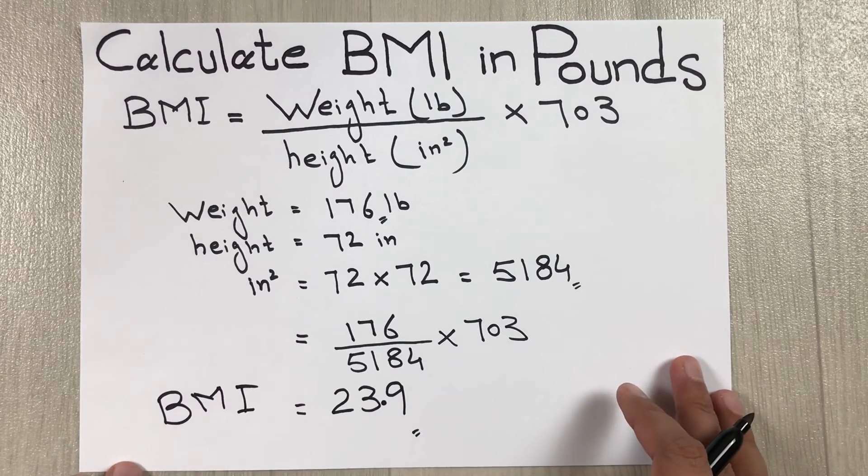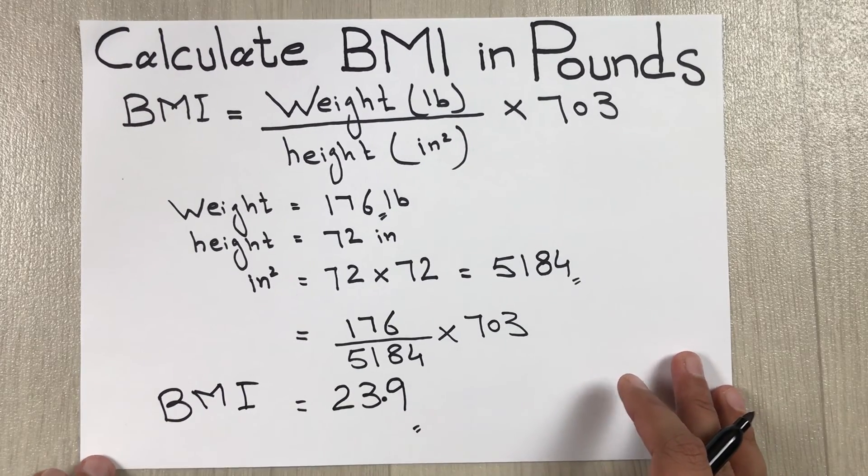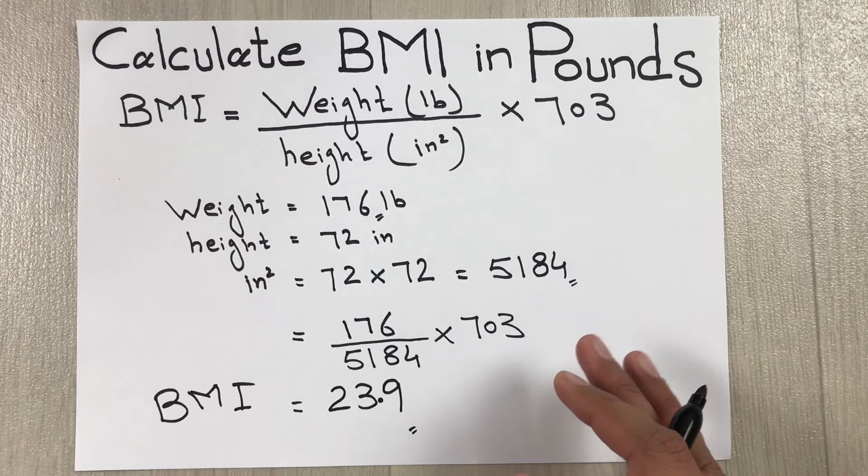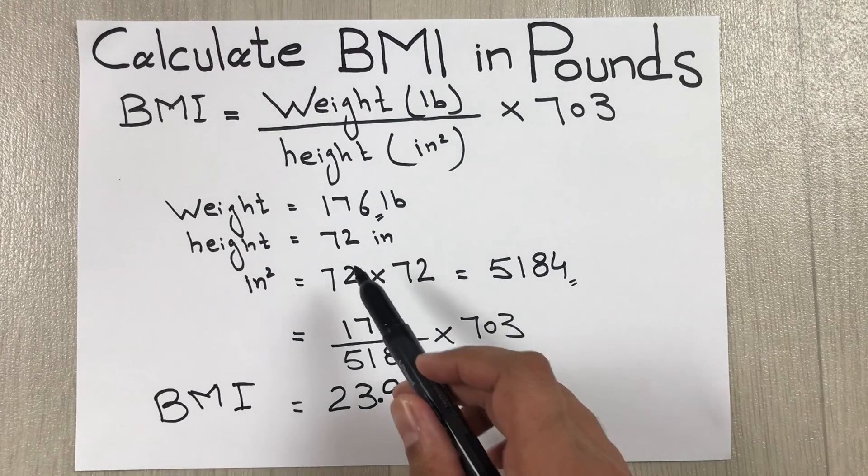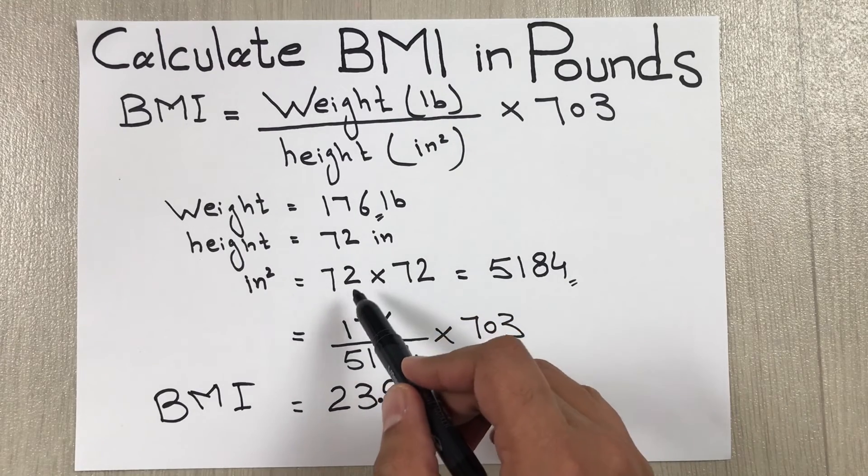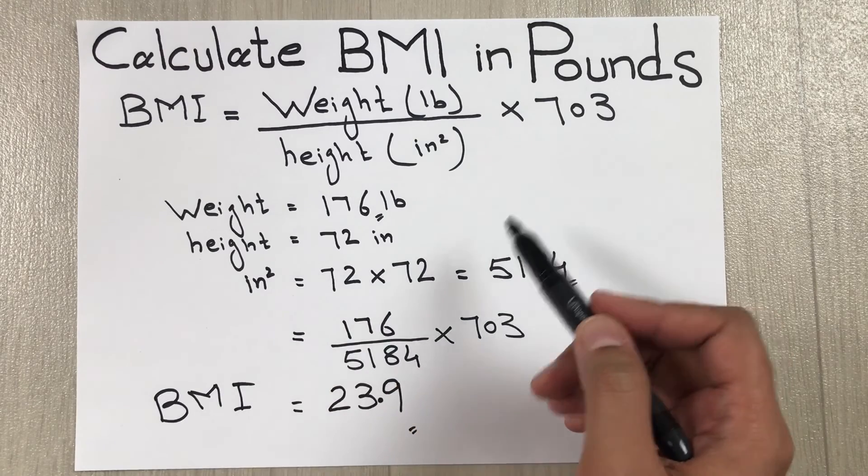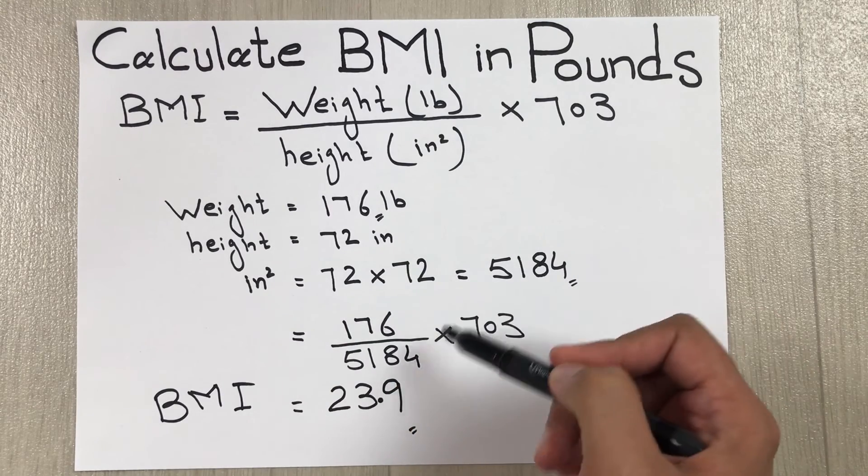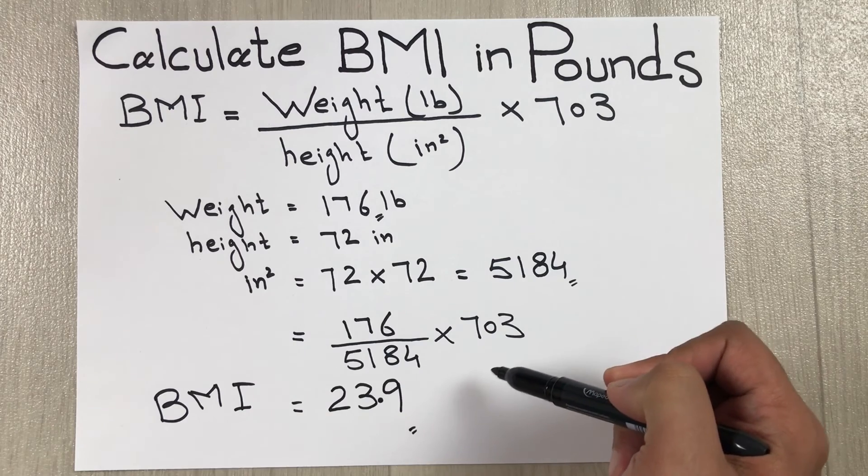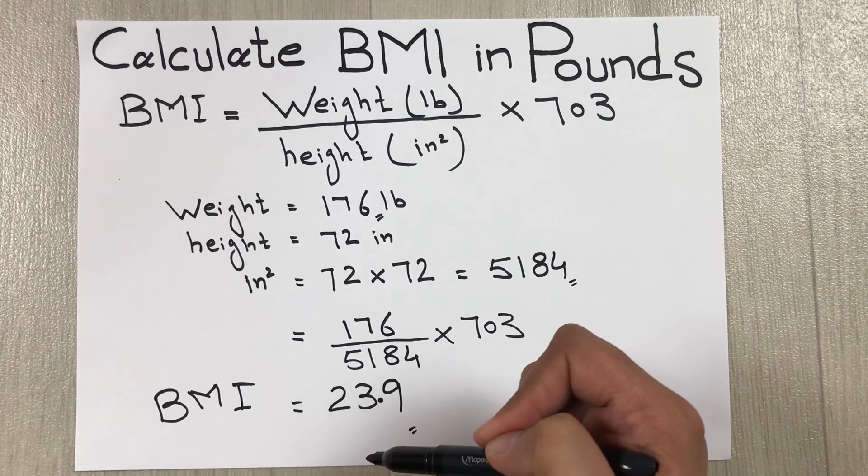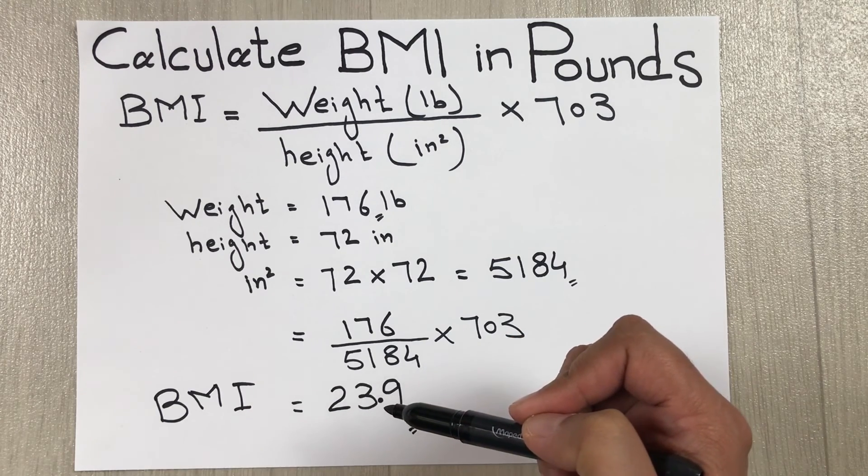So this is how you can calculate BMI in pounds. Simply you just have to multiply the inches two times, 72 multiplied by 72, then you will get your answer in inches squared. Then simply put the values in the formula and you will get your BMI.